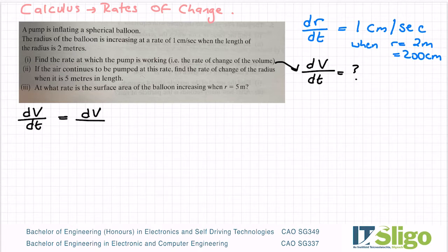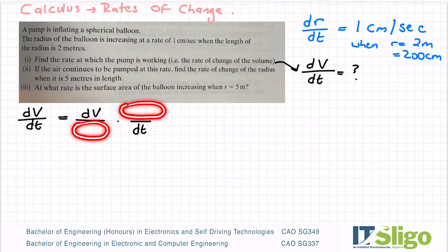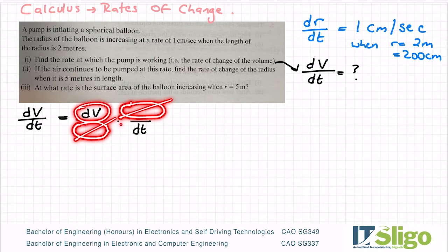This is how I always set it up. The dV is on the top, the dt is on the bottom. They're multiplied by each other and then whatever variable I put here, I'm going to also put here — these are going to match — so that I can cancel them and I'm left with dV/dt.